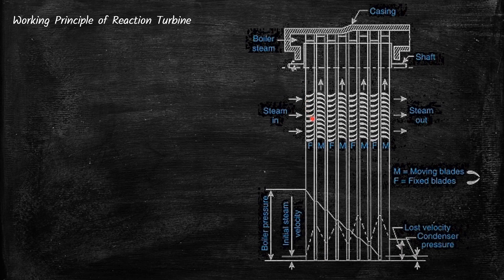In every stage the pressure drops gradually. At the beginning of the reaction turbine the steam pressure will be at a very high value, and as it moves over each blade its pressure drops gradually. So pressure drop is gradual throughout the flow in the reaction turbine.